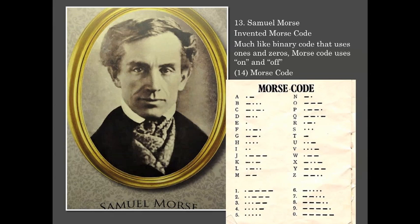Samuel Morse missed his wife's funeral due to a delayed communication, so he was obsessed with instant communication. In a sense, Morse worked on the software rather than the hardware. Much like binary code, which uses ones and zeros, Morse code uses on and off, or dits and dahs. The code relies on intervals between the dots and dashes. The more common the letter, the fewer elements. Compare the E on this chart, which is common, to the letter Q.